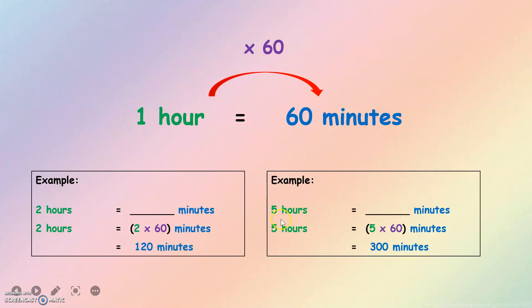Another example: 5 hours equals to how many minutes? We want to convert hours to minutes, so we multiply by 60. 5 times 60 equals 300 minutes.